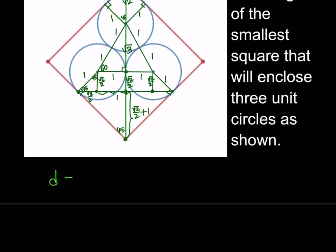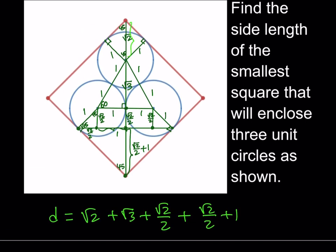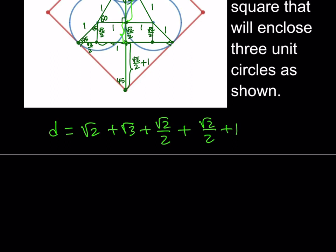What do we have? If you call the diagonal of the square d, then d is equal to square root of 2 plus square root of 3 plus square root of 2 over 2 plus square root of 2 over 2 plus 1. Did I get all the lengths? I use this one, I use this one, I use this one, and I use the last one. All together, they make up the diagonal. Let's go ahead and simplify this as much as we can, and then we'll talk about how to find the side length from the diagonal, which is going to be an easy process. So I do have some like terms, root 2 over root 2. If you add that to itself, it's going to make root 2. Another root 2 will make 2 root 2 plus root 3 plus 1.